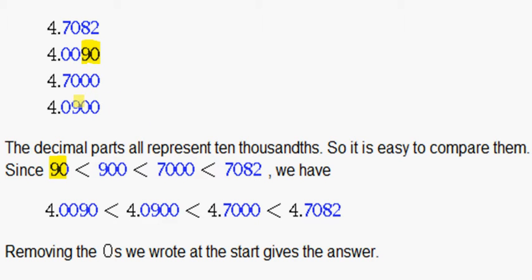The next smallest, 900. Does that go second? Then we have 7,000. So that goes third. And then 7,082. So that goes last because it is the greatest.